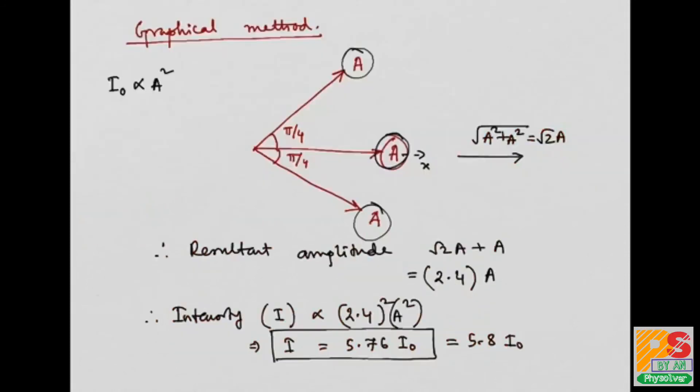So I can say approximately 5.8I₀. Look at the options - therefore option D is correct. Thank you for watching this video, please subscribe my channel Physolver.